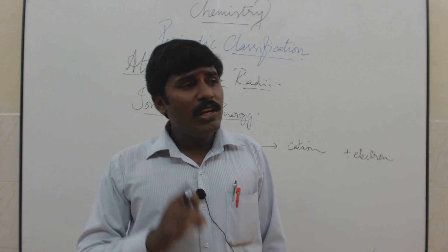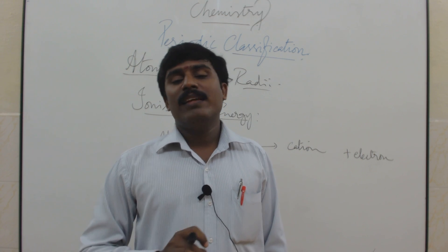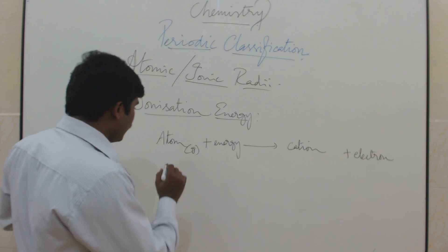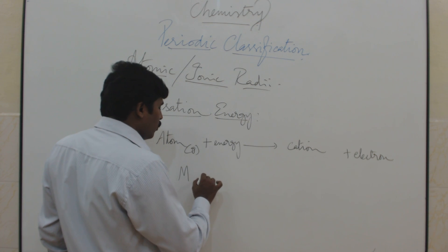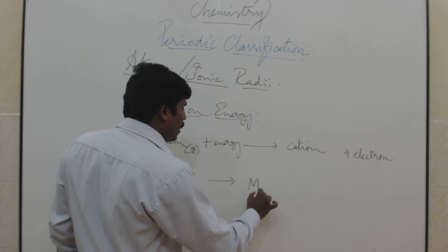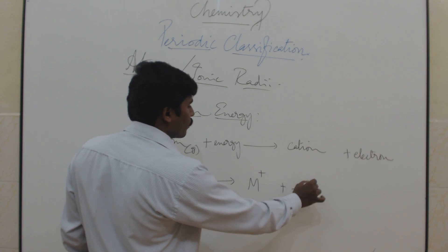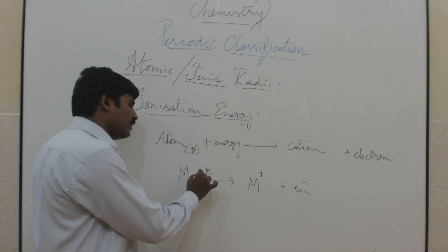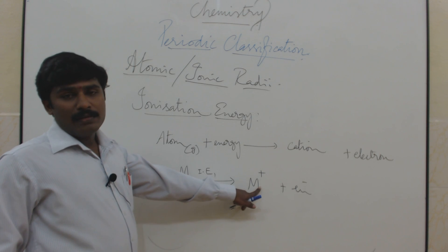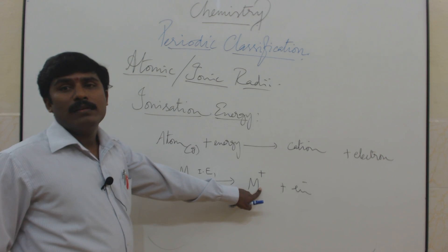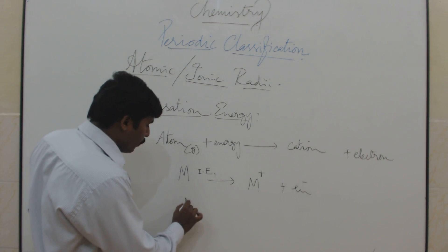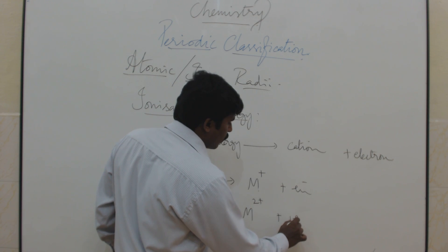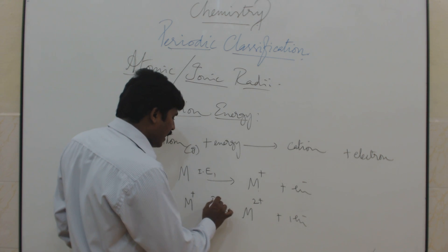When the first electron is removed, the energy required is called the first ionization energy, and the atom becomes M⁺. When one more electron is removed from M⁺ to give M²⁺, that energy is called the second ionization energy. Comparing the two, the second ionization energy is greater than the first.